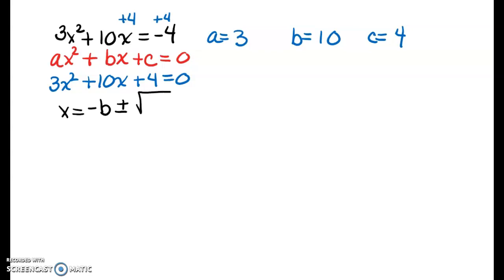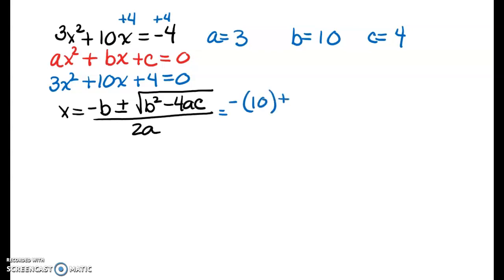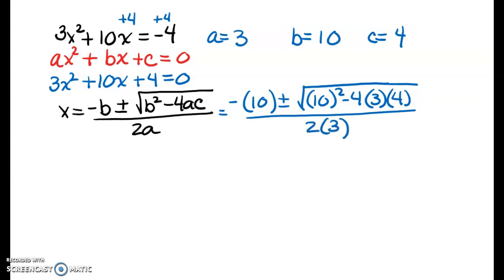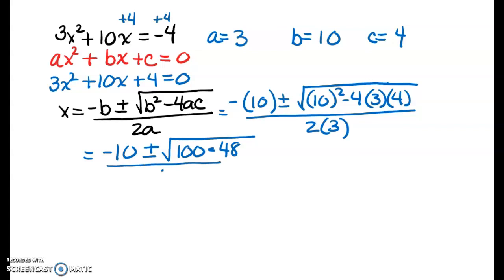So x equals negative B plus or minus the square root of B squared minus 4AC all over 2A. When I substitute my values in parentheses, I get negative 10 plus or minus the square root of 10 squared minus 4 times 3 times 4, all over 2 times 3. Simplifying: negative 10 plus or minus — 10 squared is 100, and 4 times 4 is 16 times 3 is 48. Then 2 times 3 is 6. So 100 minus 48 equals 52.